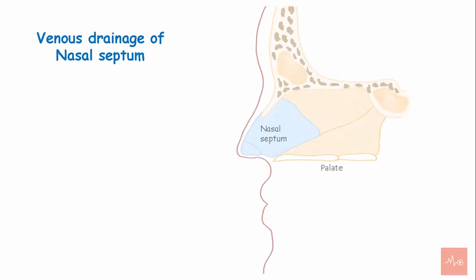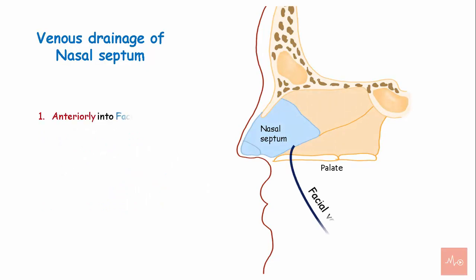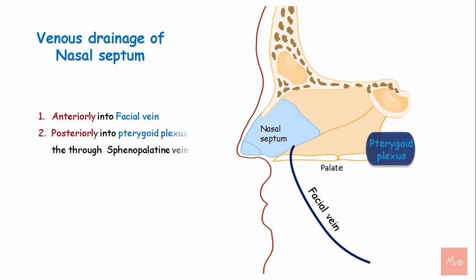Venous drainage of the nasal septum. A venous plexus is formed near Little's area, and this plexus drains anteriorly into the facial vein and posteriorly into the pterygoid plexus through the sphenopalatine vein.